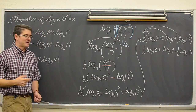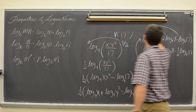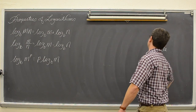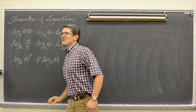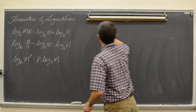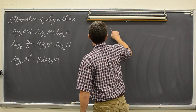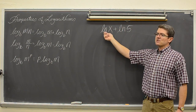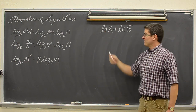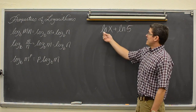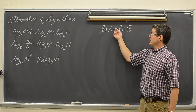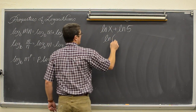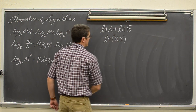Last expansion problem done. Let's start doing some condensing problems. So the first condensing problem: we have two logs and we are trying to write it as one singular log. Natural log of x plus natural log of five. Natural log is log base e. Two logs, both with a leading coefficient of one, both with the same base of e. So we just put those together and write the natural log of five x.